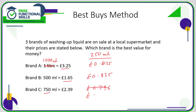£2.39 divided by three comes to £0.796 recurring — let's call that £0.80. So comparing the prices per 250ml, the cheapest is Brand C.